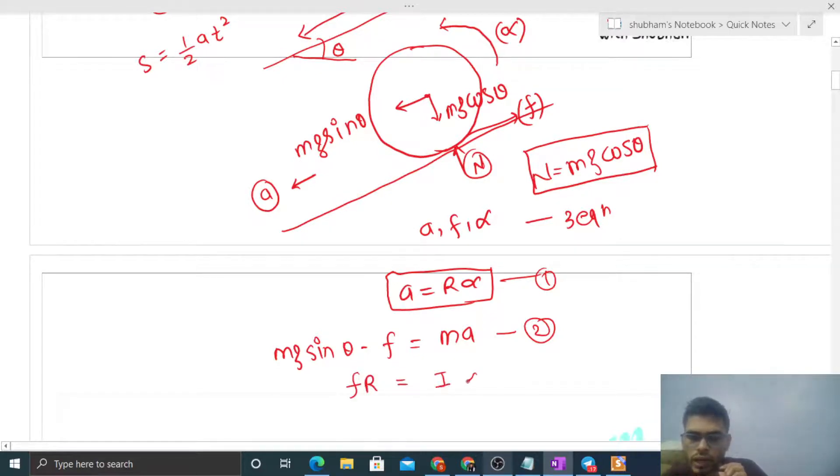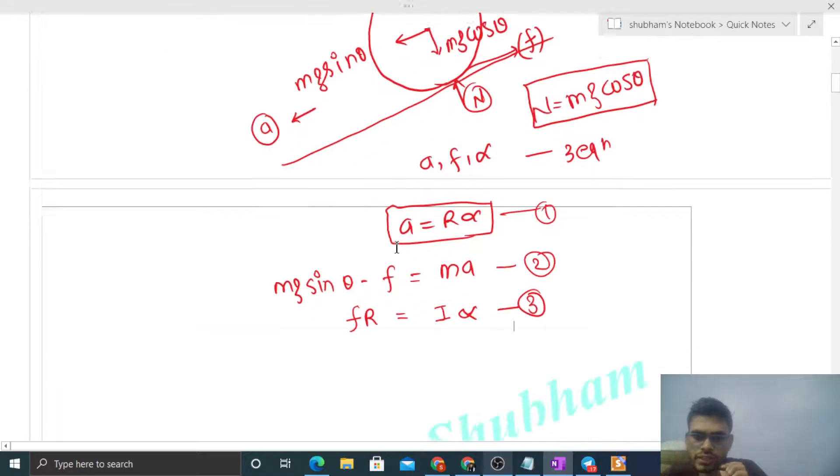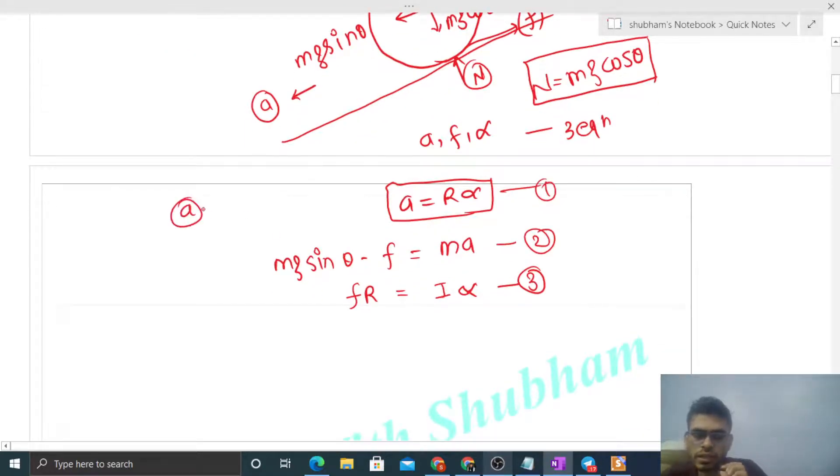We need to find acceleration, so we can eliminate alpha. From the first equation, alpha equals a upon r. Putting this in the third equation, we can find the value of friction force.